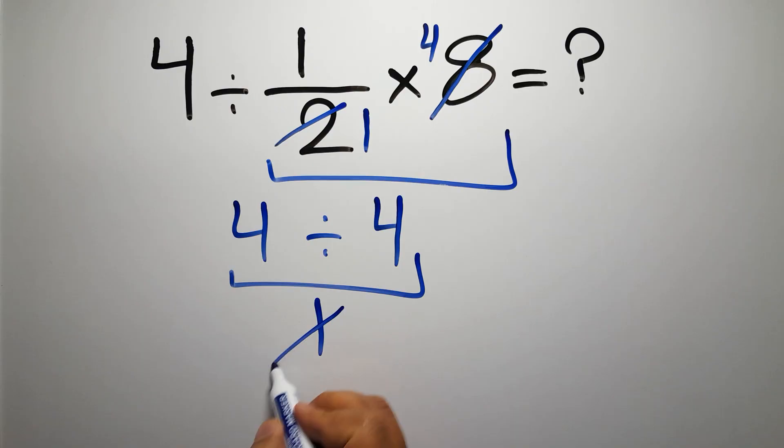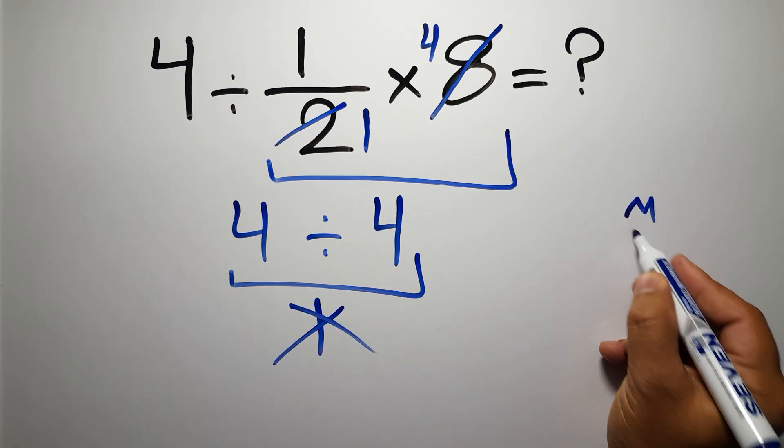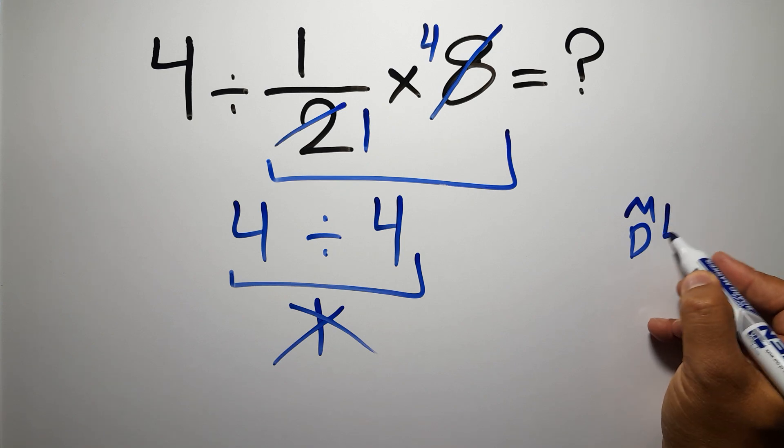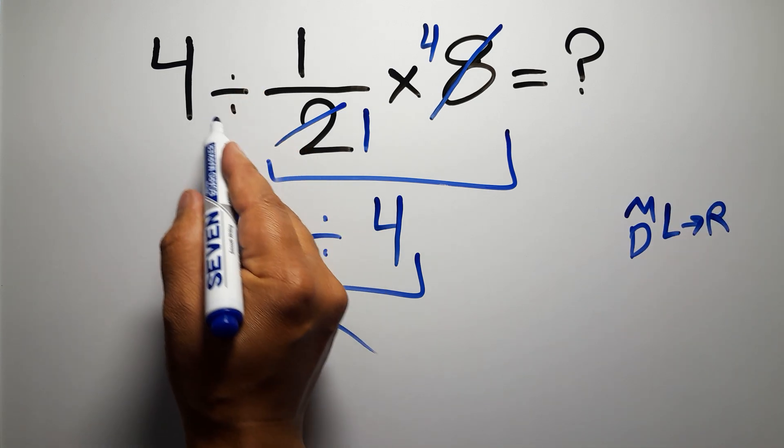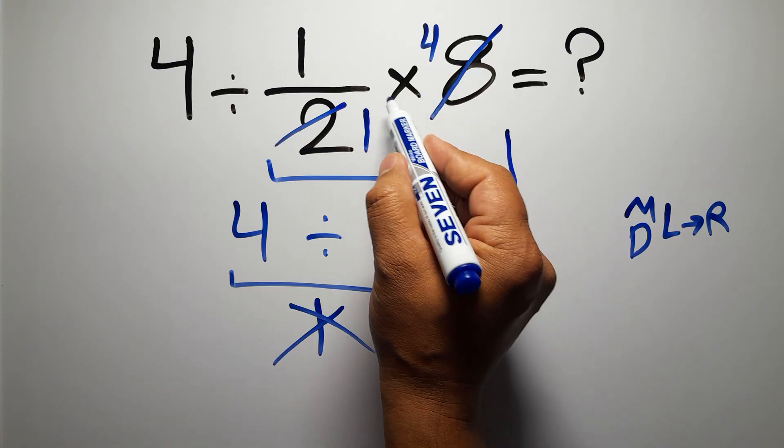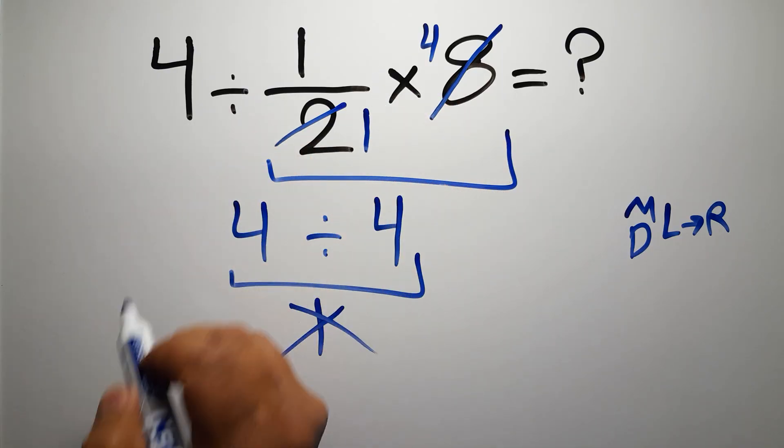Because according to the order of operations, multiplication and division have equal priority and we have to go from left to right. So here first we have to do this division, then this multiplication. If we do this multiplication before this division, it is wrong.